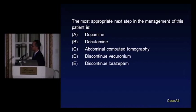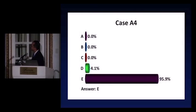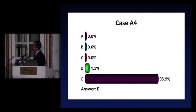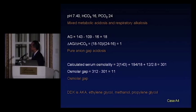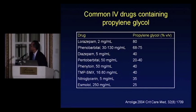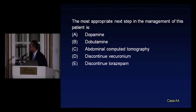96% got it right. This is an anion gap acidosis with a respiratory alkalosis — you'd need to discuss vent settings with the pulmonologist. But there's also an osmolar gap. The differential includes alcoholic ketoacidosis, ethylene glycol, methanol, or propylene glycol. In this case, with the Ativan drip, propylene glycol is most likely, so discontinuing or lowering the dose of lorazepam would be appropriate.